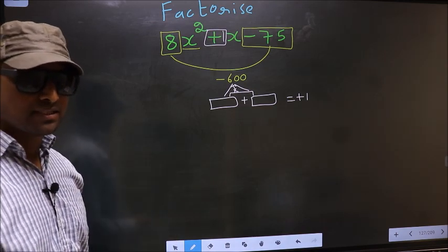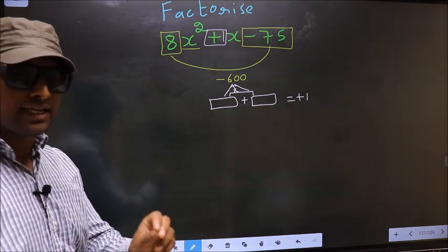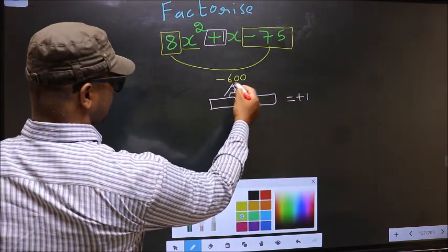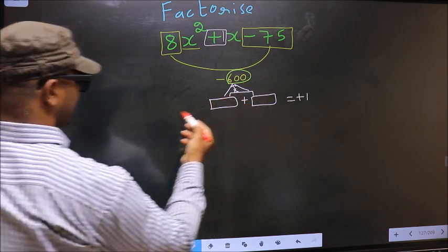To get those 2 numbers, we should take LCM of 600. So the LCM we take here.